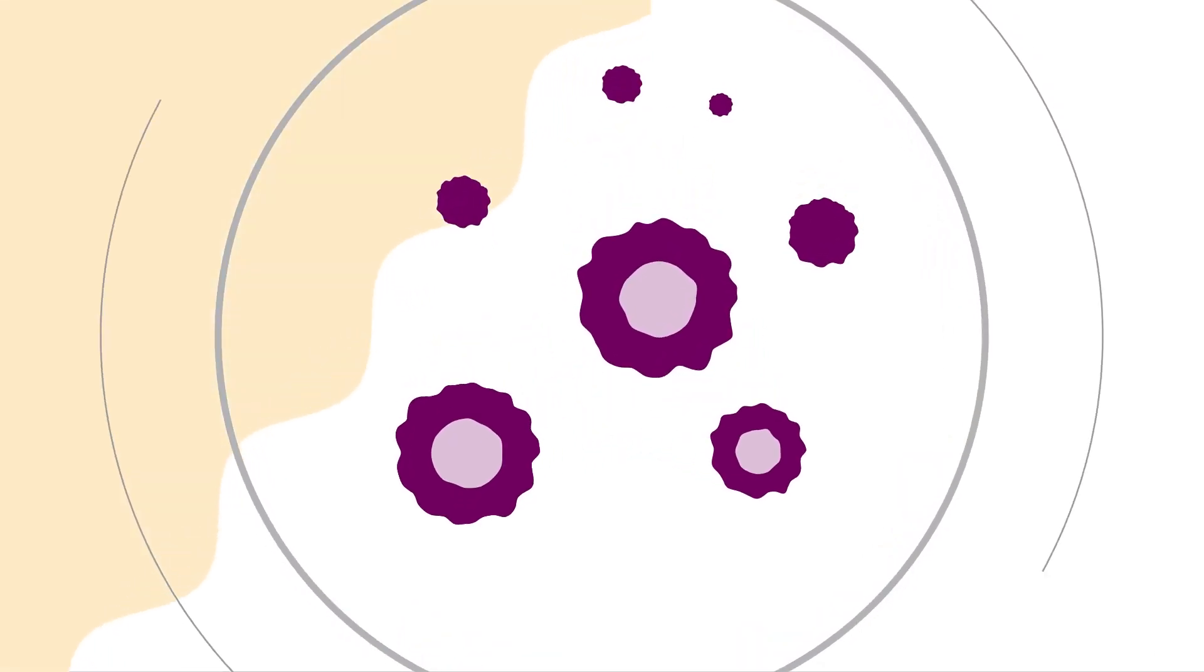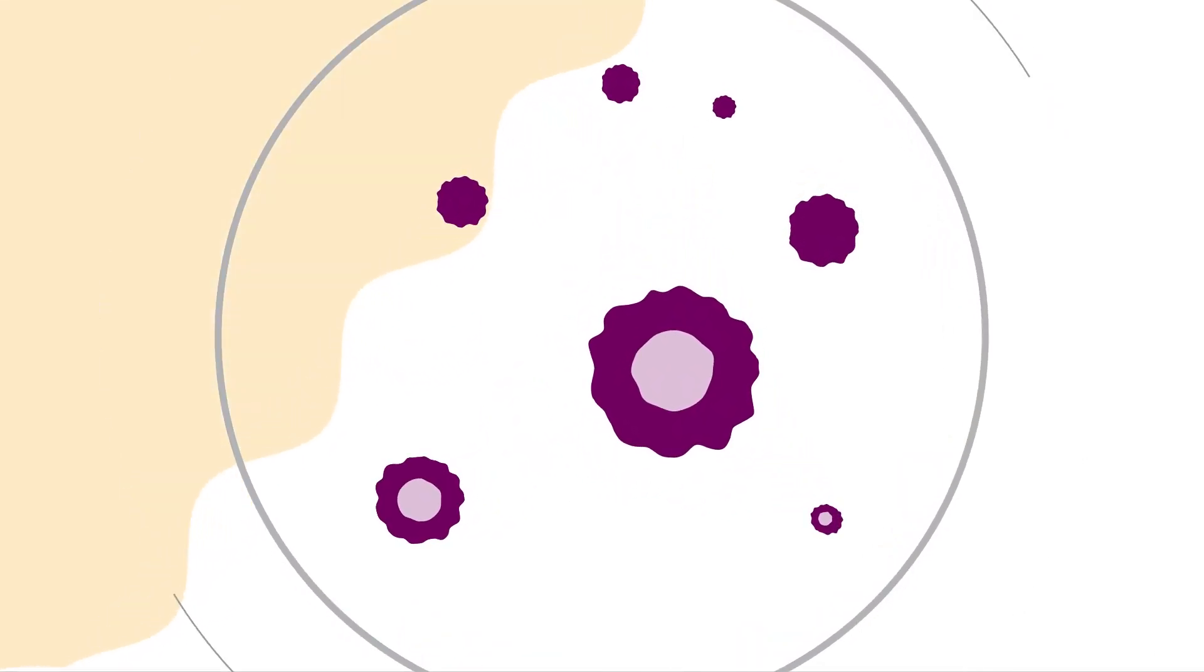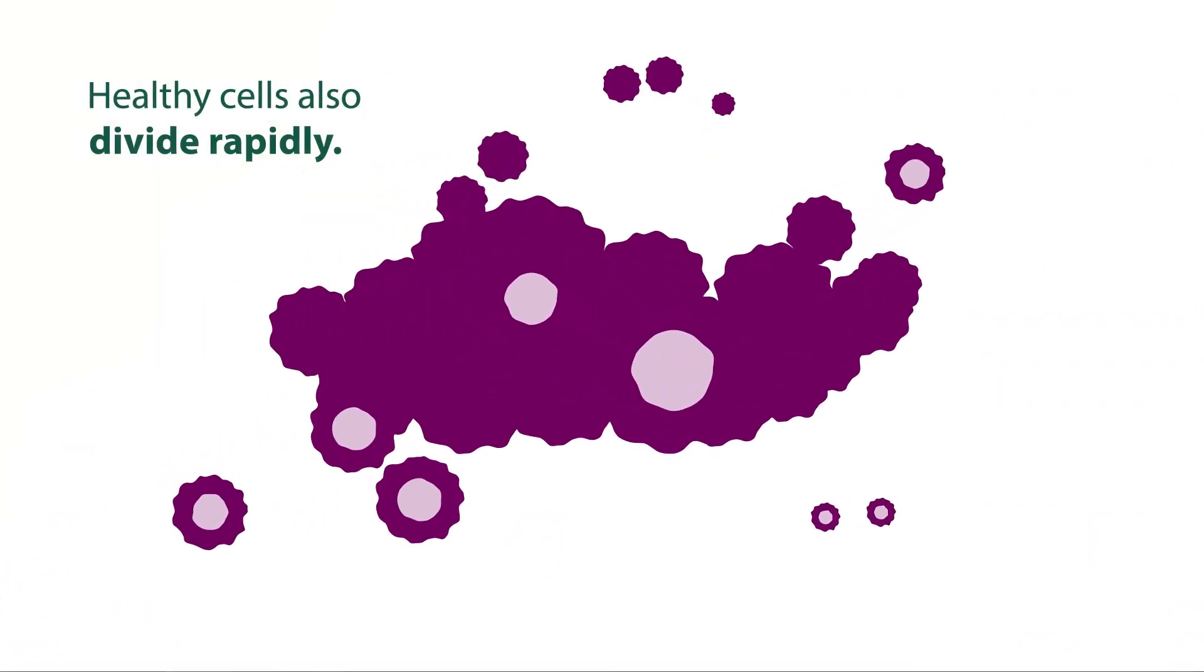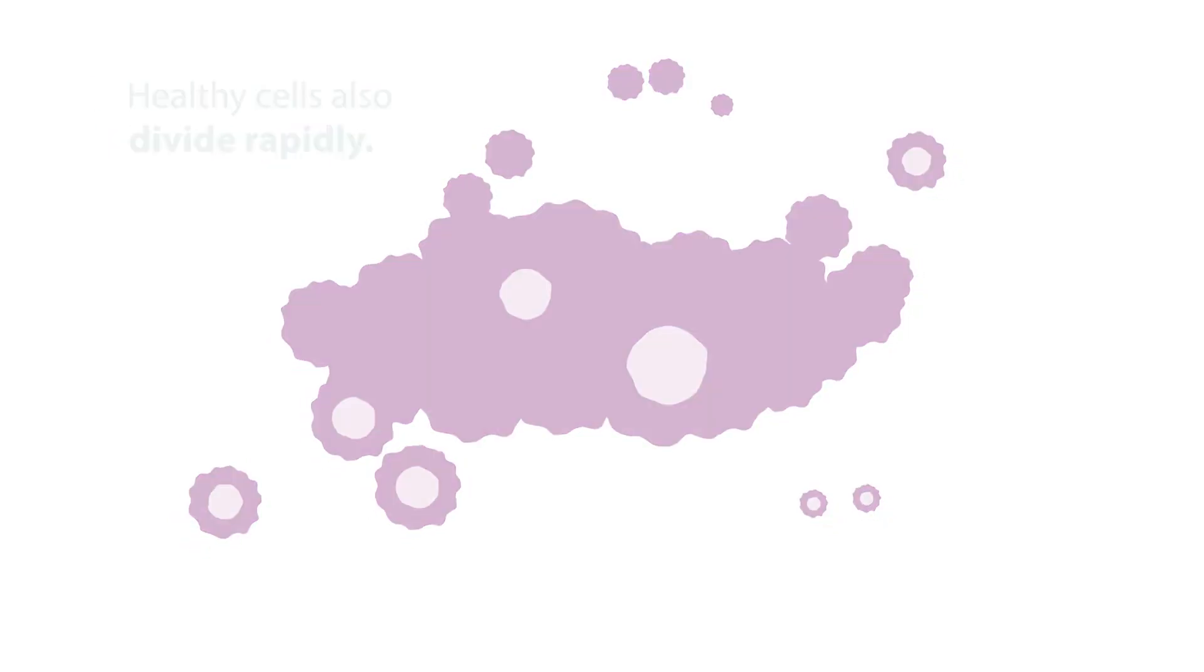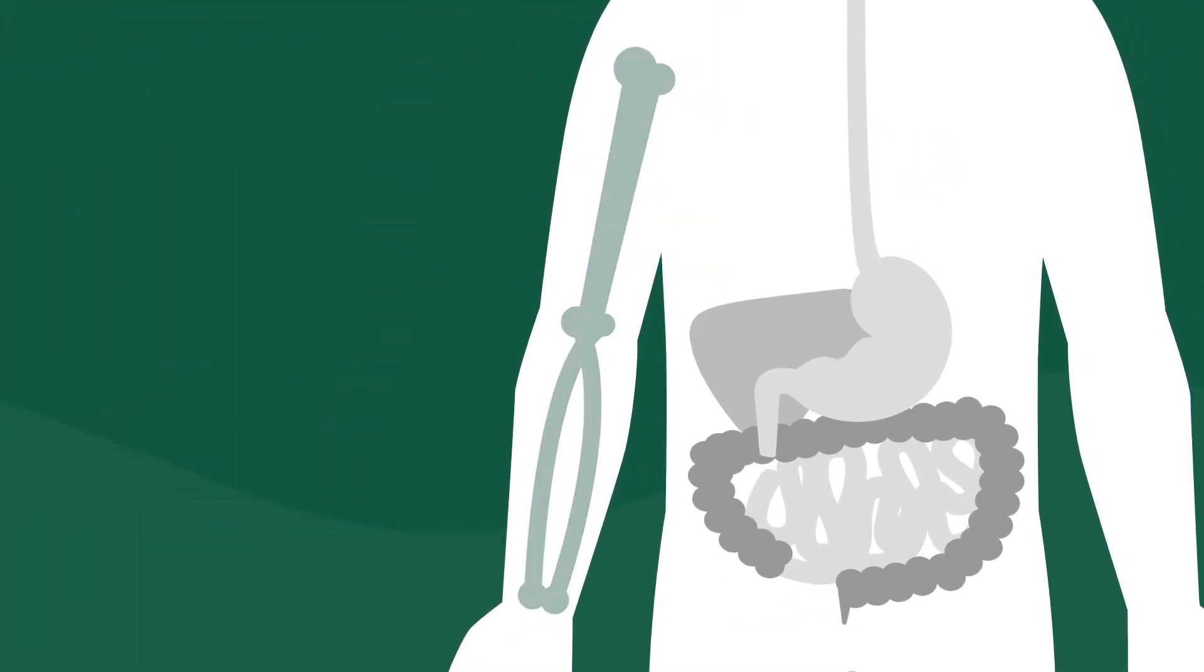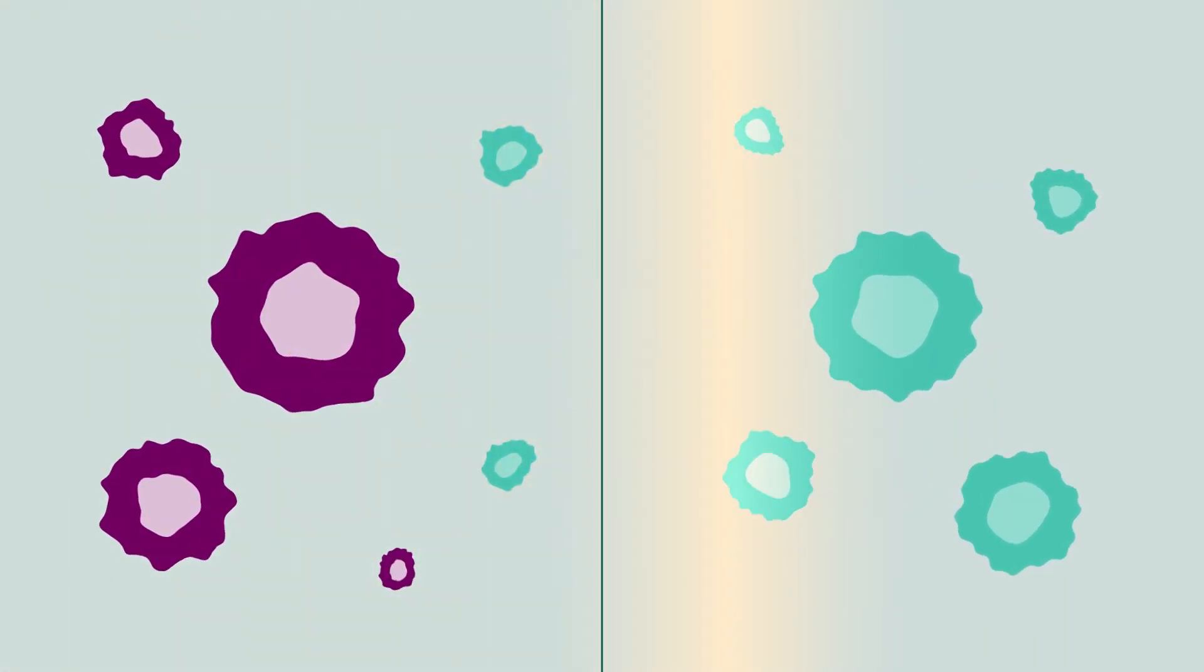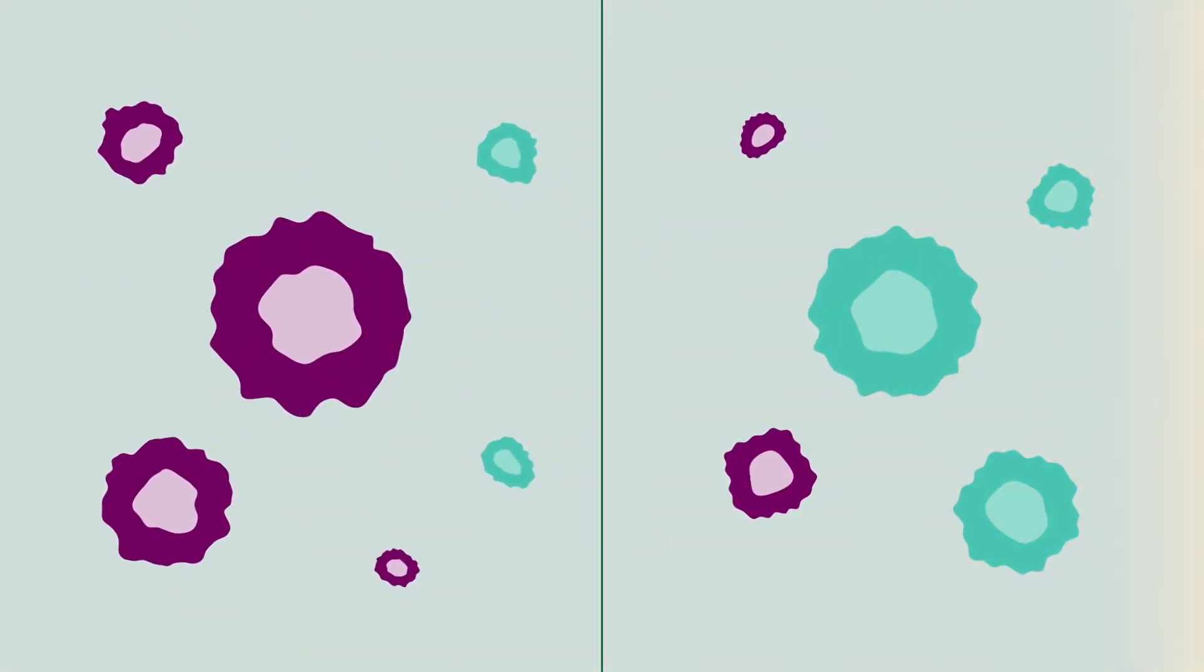However, as effective as these drugs may be in stopping cancer cells from growing in the body, the treatments can also damage healthy cells in the process. This is because some healthy cells also divide rapidly, like cells found in bone marrow, the digestive tract, and hair follicles. Chemotherapy drugs cannot tell the difference between fast-dividing healthy cells and cancerous cells.